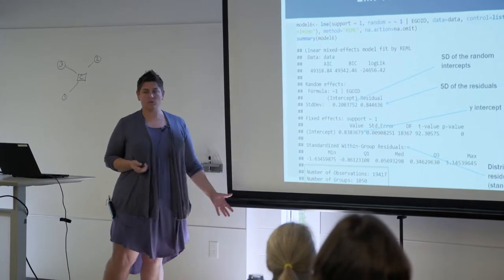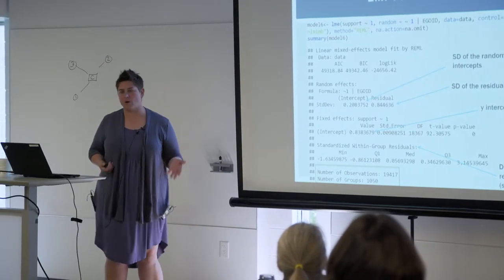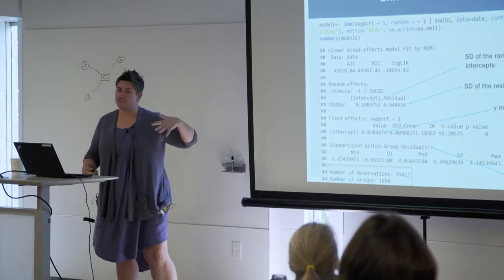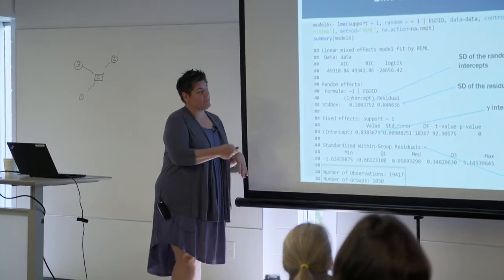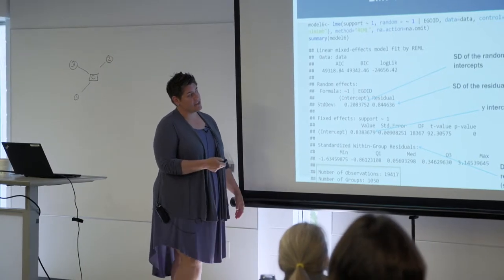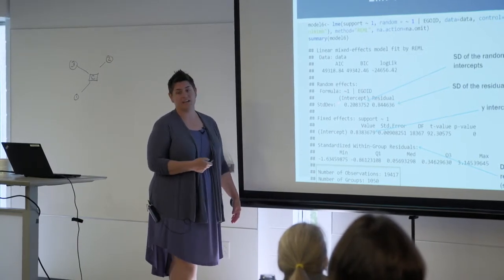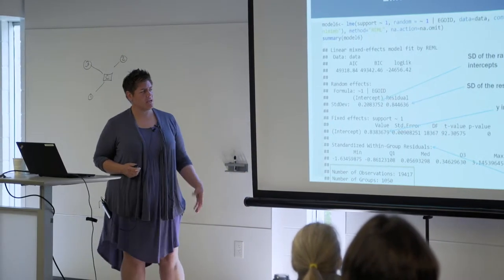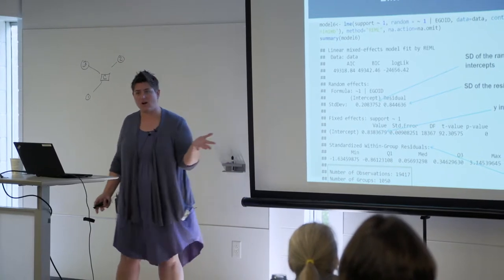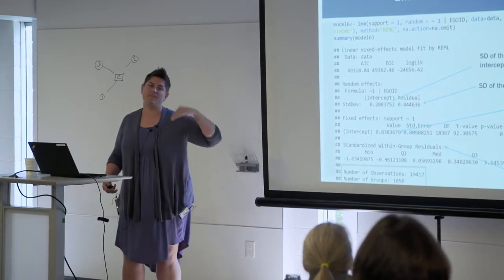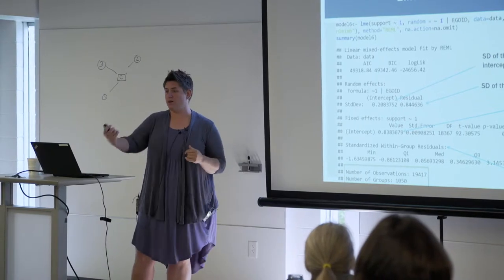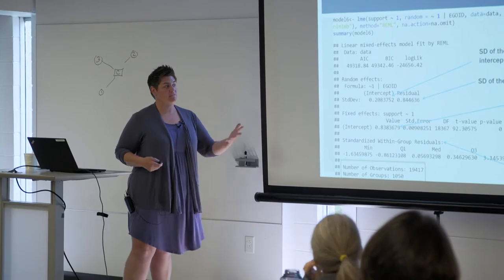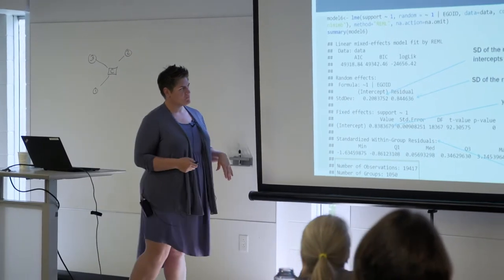This is the standard deviation of the residuals, which you would also get from an OLS model — it tells you how far apart are the observations from the random intercept. Here we can see that the variation within is bigger than the variation between. In other words, people's own alters are more different from each other on average than the egos are from each other, so there must be something about that dyad or that alter that has a big effect on support given.